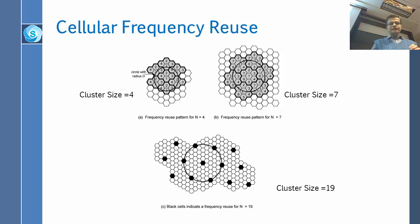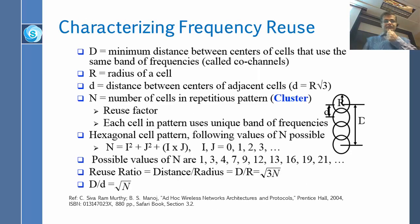If you have radius r of the cell, and N is the number of the cells in the repetition pattern (cluster size), we already showed you three examples: n equal to 4, n equal to 7, n equal to 19. If n is the cluster size, d is the distance between the centers of the adjacent cells.